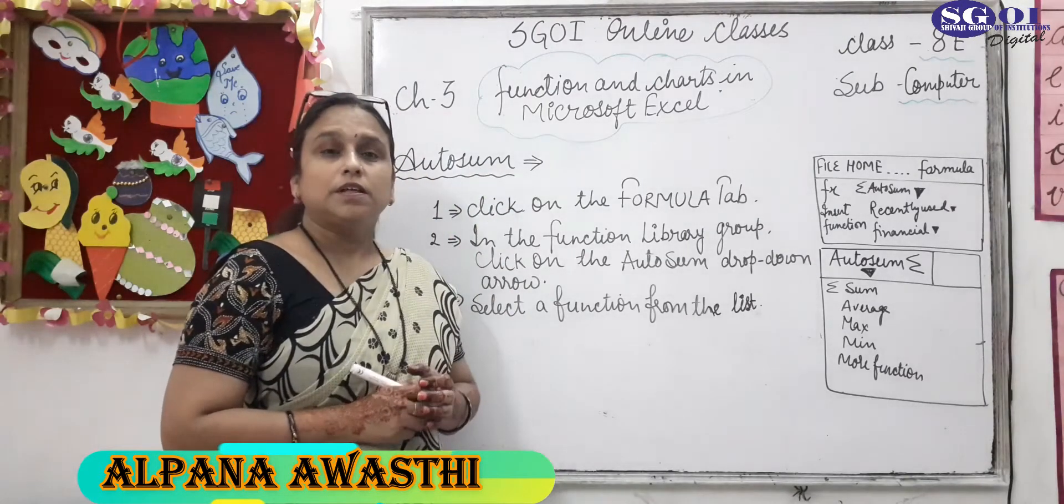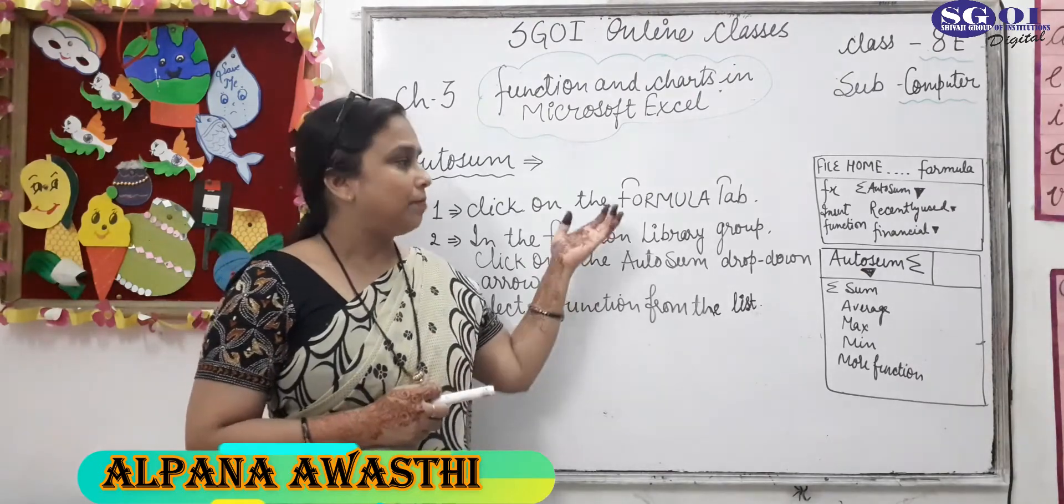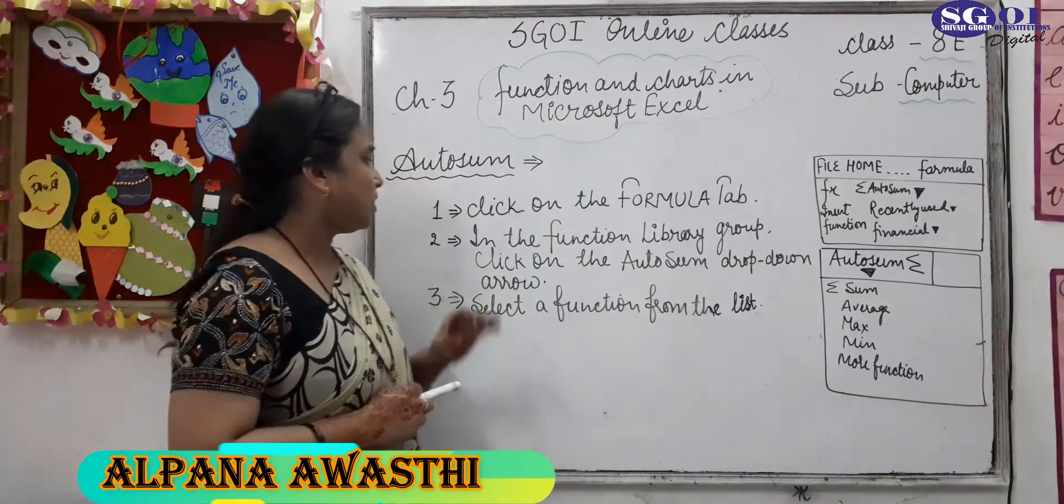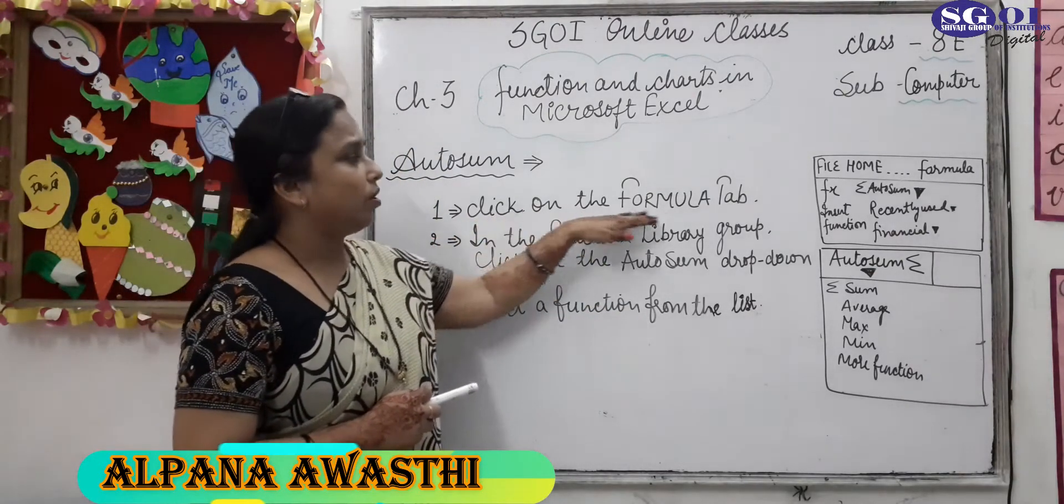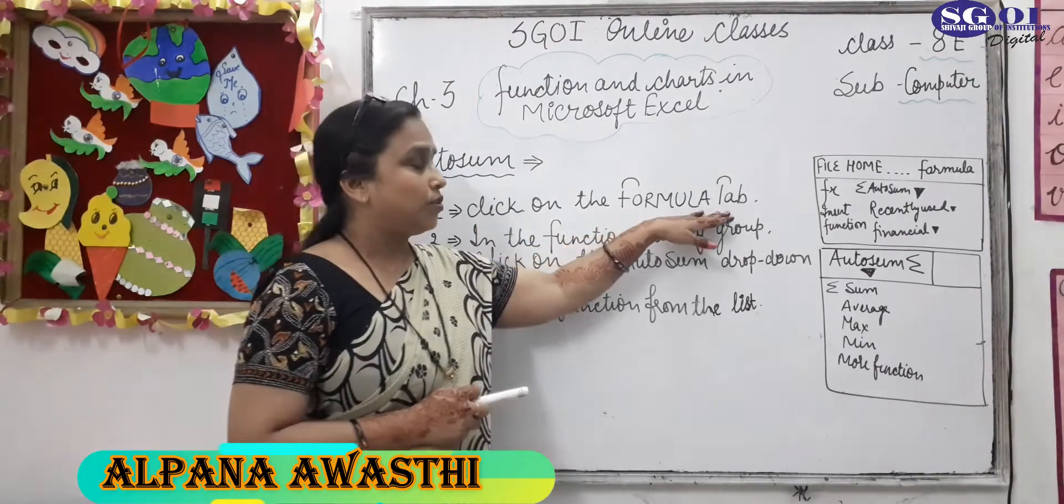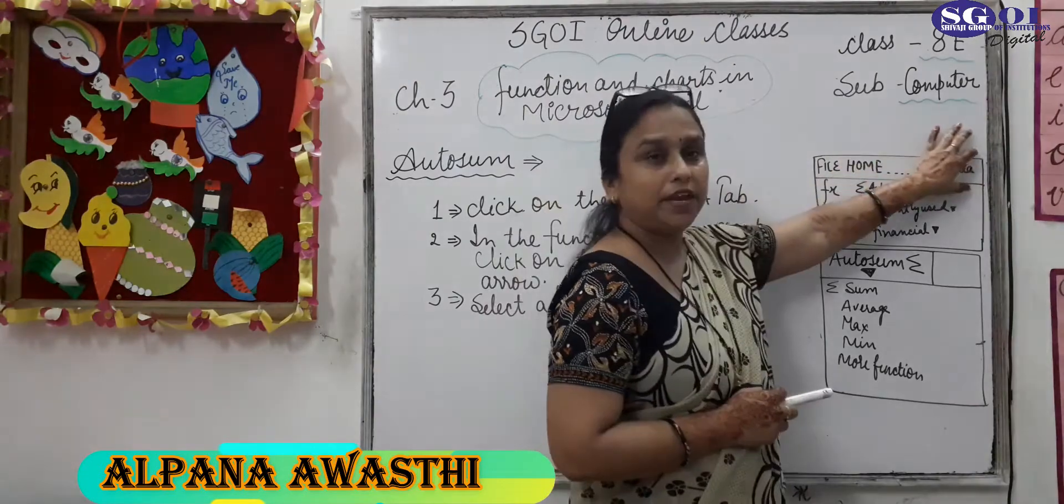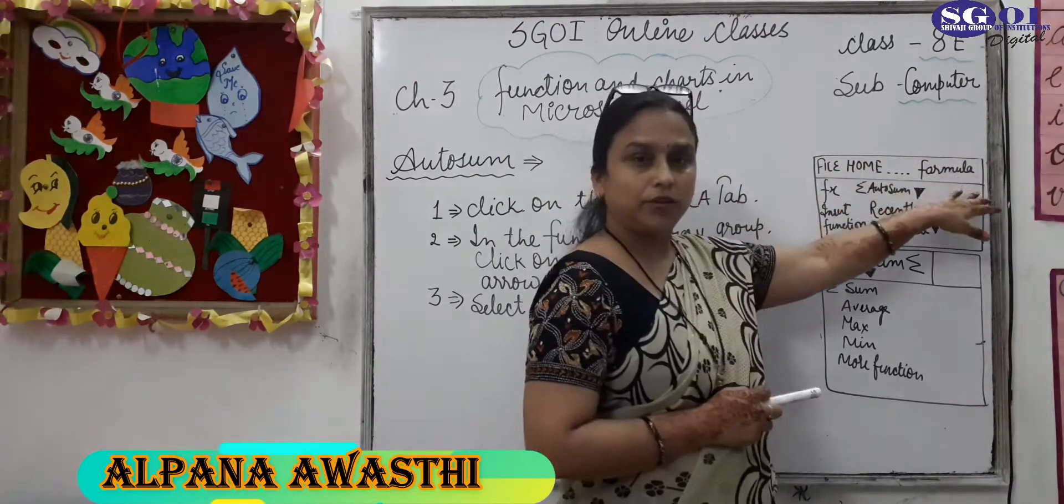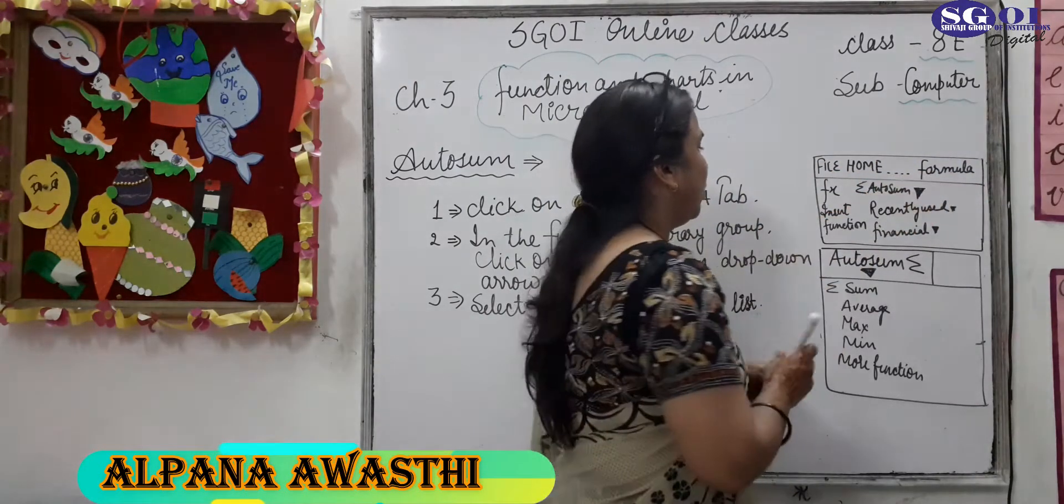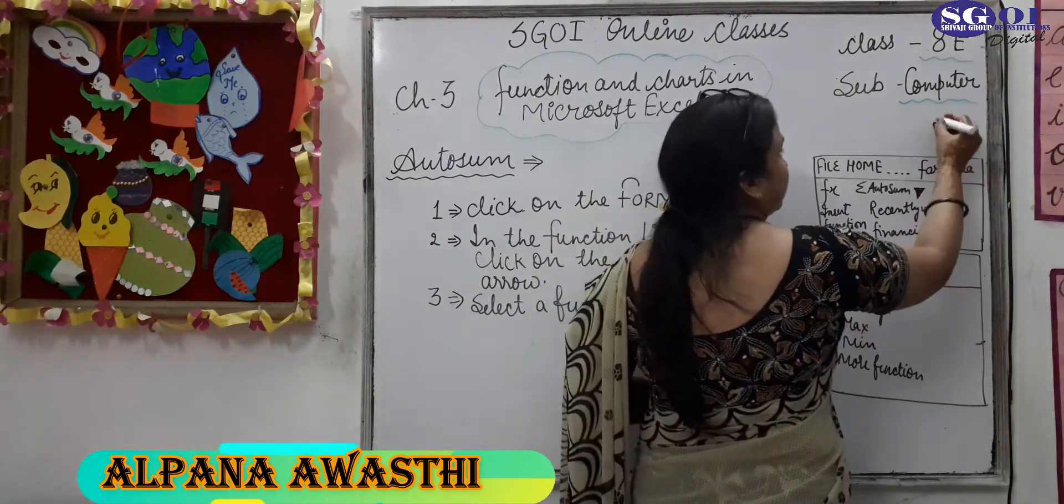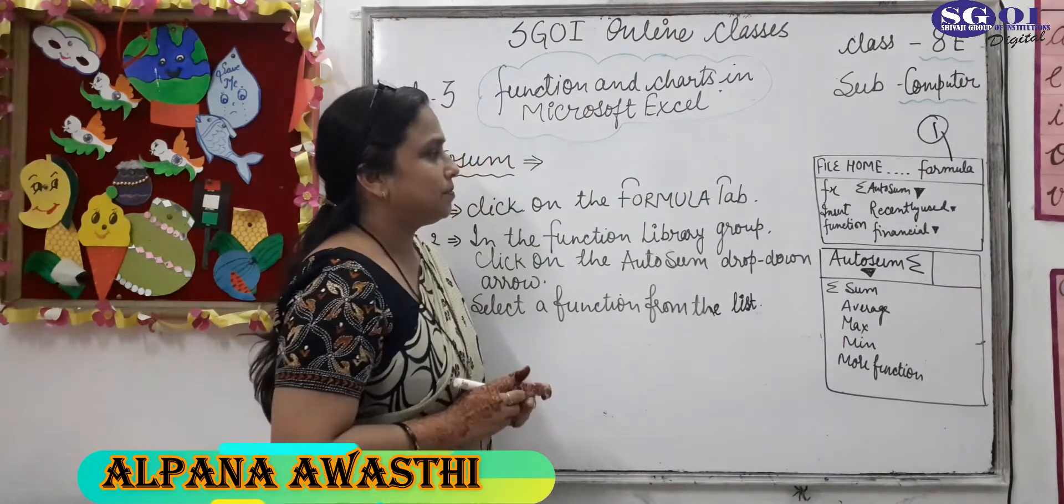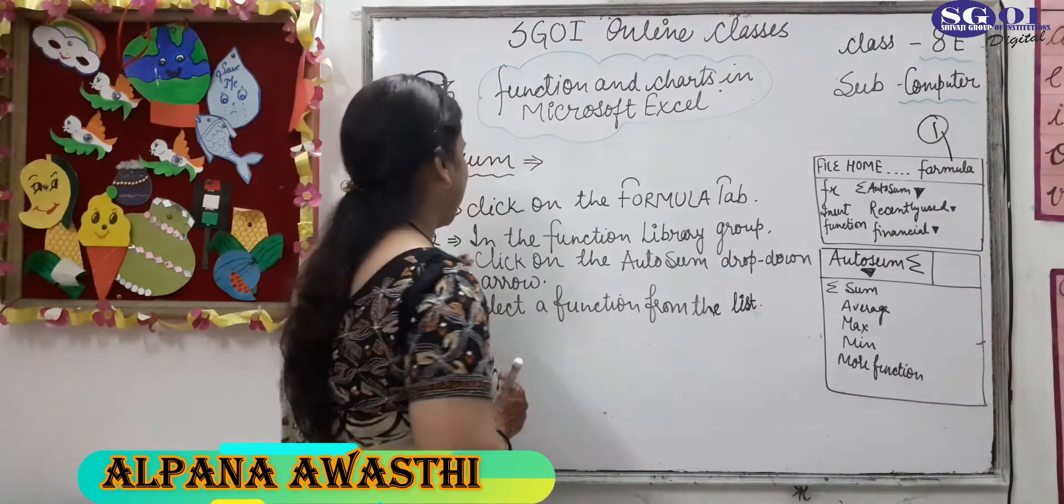How to use auto sum function? The method is given. First of all, click on the formula tab. What is the formula tab? Formula tab present on your main menu. This is the main menu. Click on formula tab. First step is this.